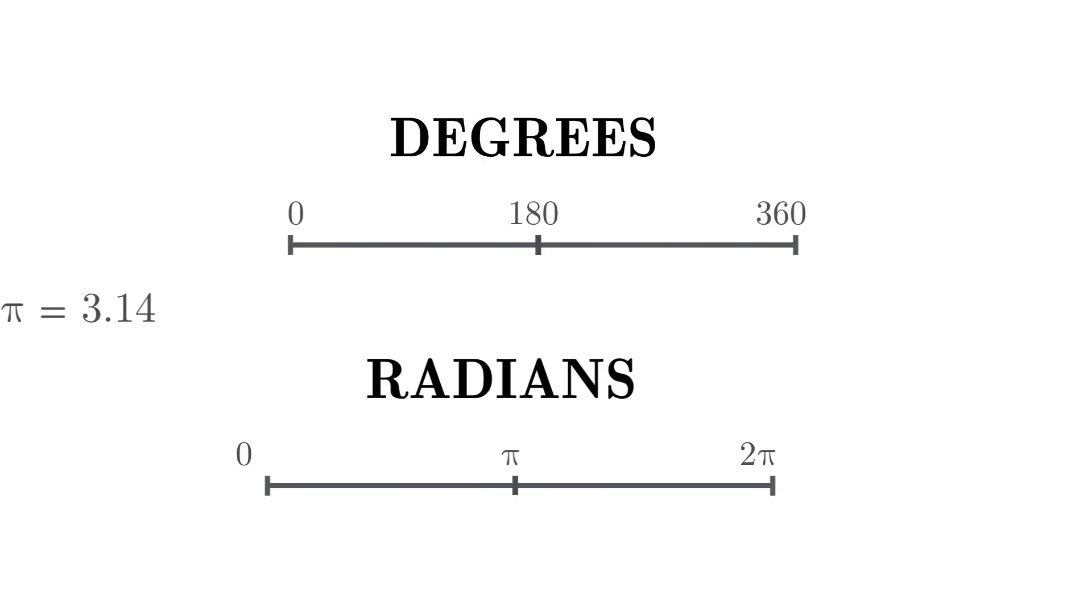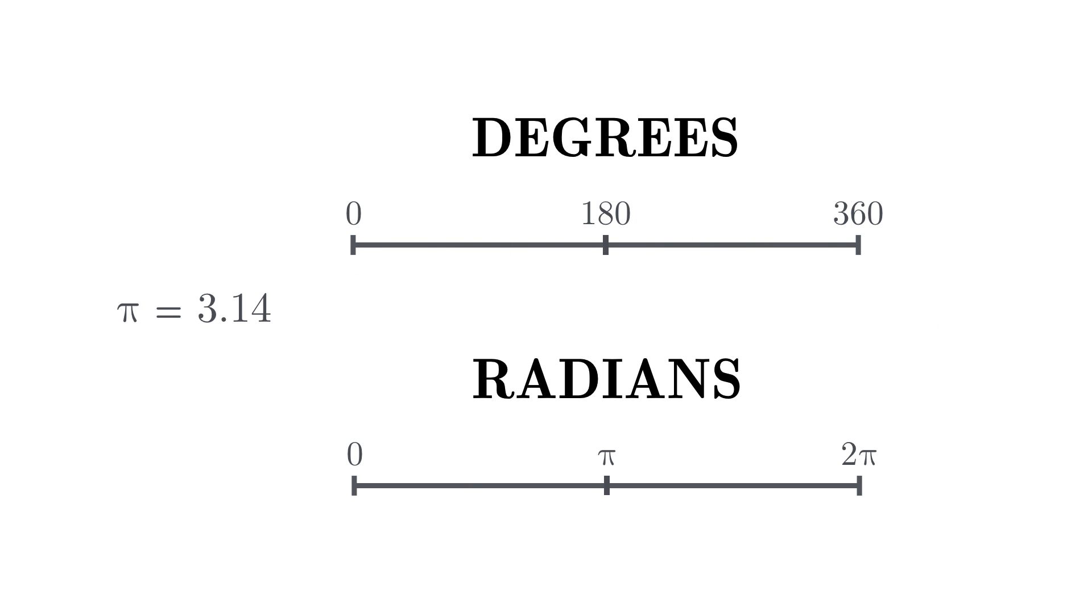One thing that we have to be careful with when dealing with the sine function is that because it uses an angle as input, we have to decide what unit of measurement we want to use. Most people are familiar with using degrees to measure angles, but it's just as common to use radians. The only difference is that instead of going from 0 degrees to 360 degrees, the angle goes from 0 radians to 2 pi radians. Pi of course being the number 3.14.